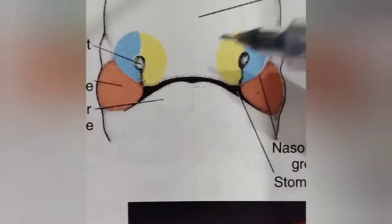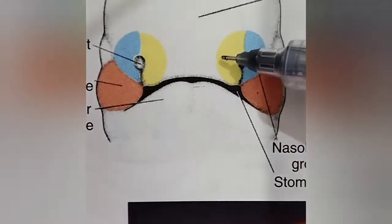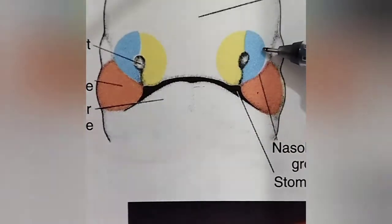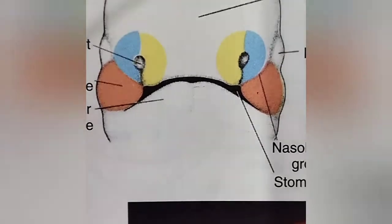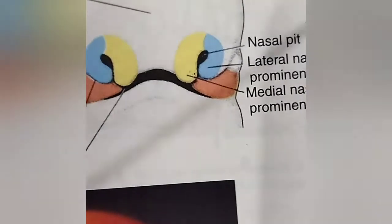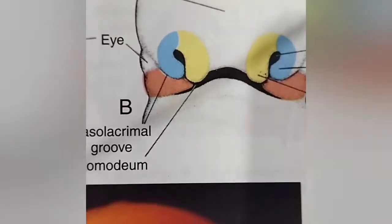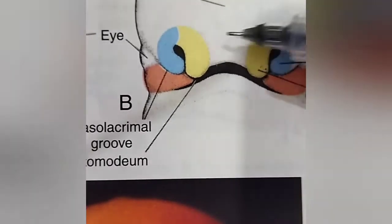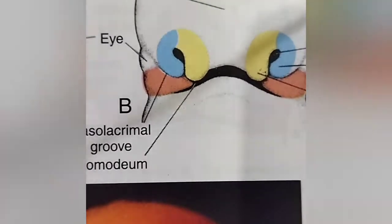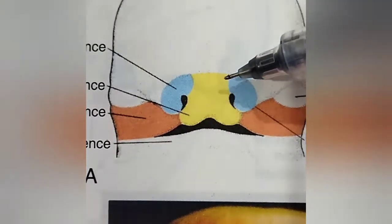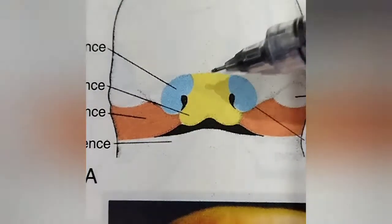The frontonasal process is divided into two parts: the medial nasal prominence and the lateral nasal prominence. The two medial nasal prominences then start to come closer together and eventually close together.